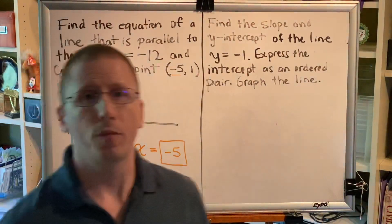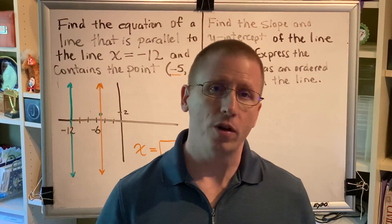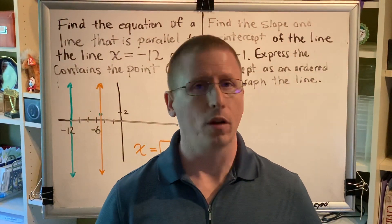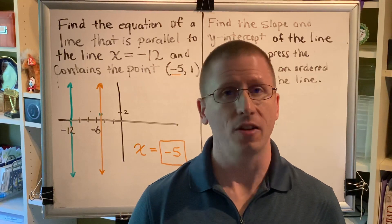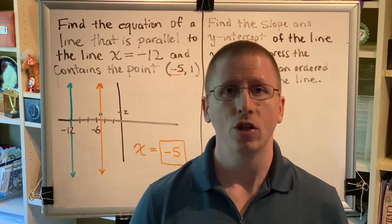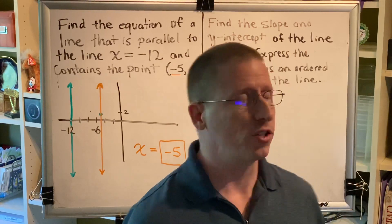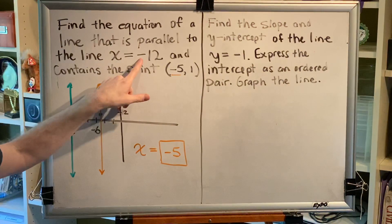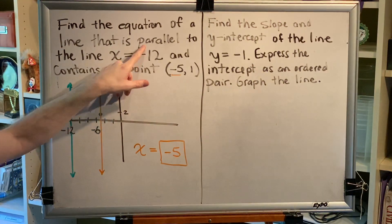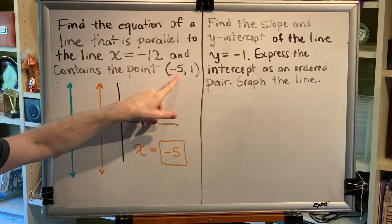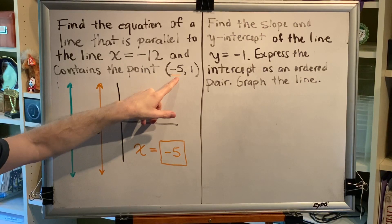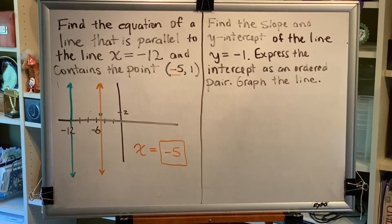Now, it's my hope that given enough practice and given a thorough understanding of the four facts regarding horizontal and vertical lines, you won't have to do any work at all for a problem like this. You won't have to draw any pictures. You'll just think your way through the logic. x equals negative 12 is vertical. Something parallel to a vertical line is another vertical line. And the equation of a vertical line that goes through negative 5 comma 1 must be x equals negative 5.